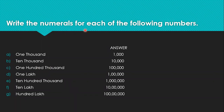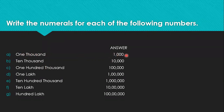Now we will discuss some questions. The first question: write the numerals for the following numbers. One thousand — that's 1,000, with a one and three zeros. Ten thousand — that's 10,000, with a one followed by four zeros. One hundred thousand is equal to one lakh. One lakh and one hundred thousand are the same. Ten hundred thousand is equal to ten lakh.